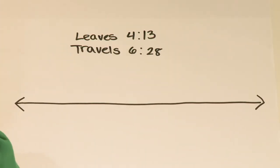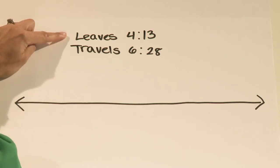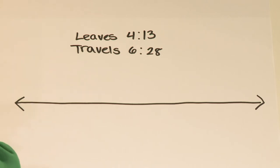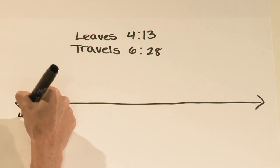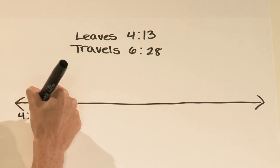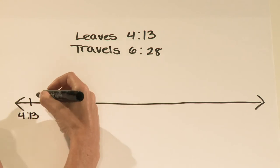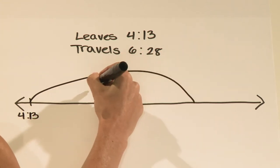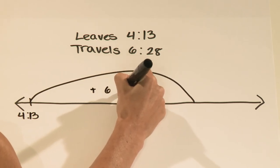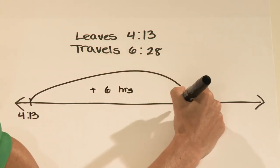Now let's take a look at one last problem. A train leaves Chicago at 4:13 PM and travels for 6 hours and 28 minutes to St. Louis. At what time does it arrive in St. Louis? So we can start on our number line at 4:13 PM and take a giant jump of 6 hours to 10:13 PM.